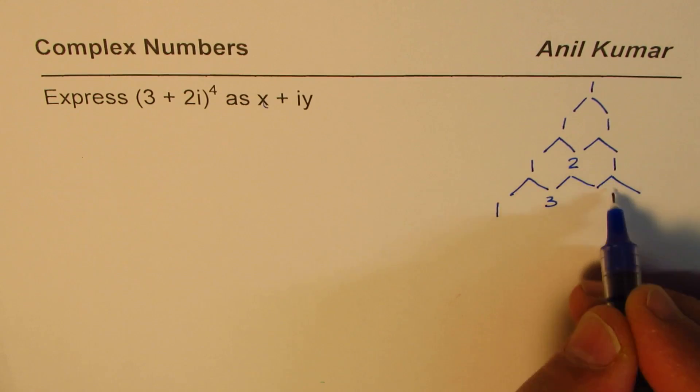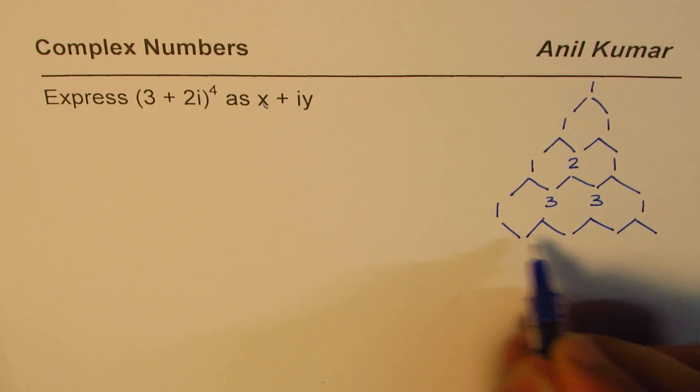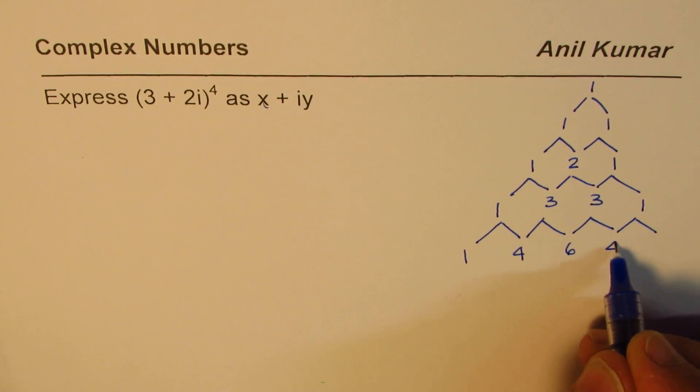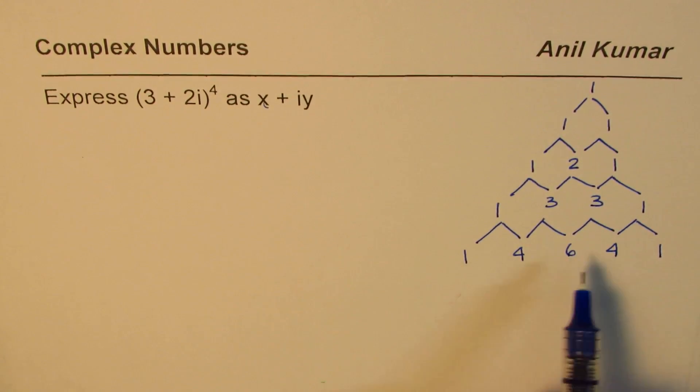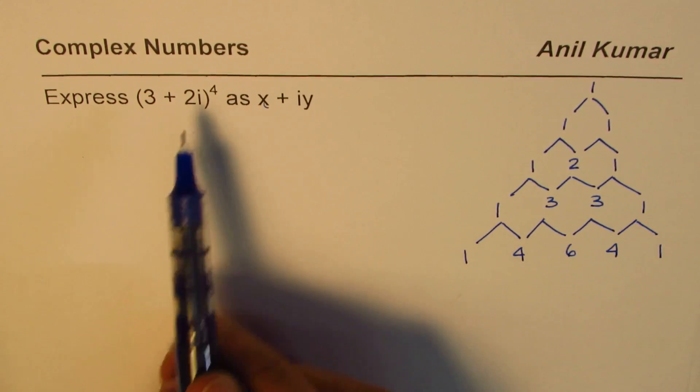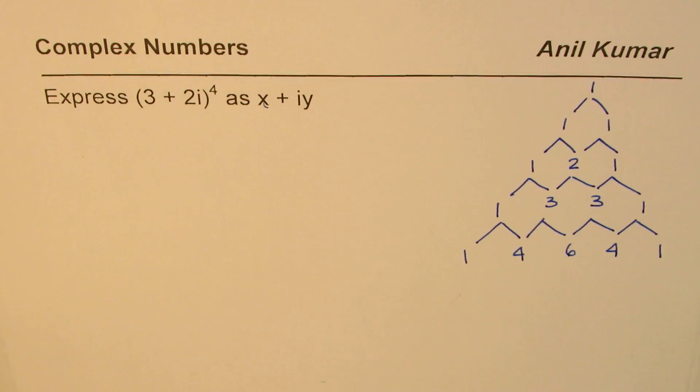So 1 plus 2 is 3, 2 plus 1 is 3, 1 on the side, and you'll also see that there is a symmetry. 1, 3 plus 3 is 6, 3 plus 1 is 4, and 1. See, this expression now, this is the fourth row for us which represents the coefficients for expanding a binomial term.